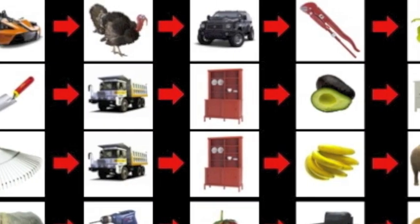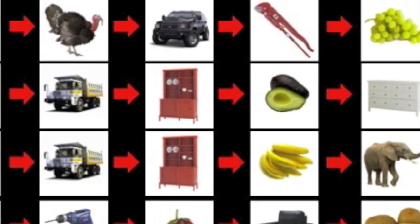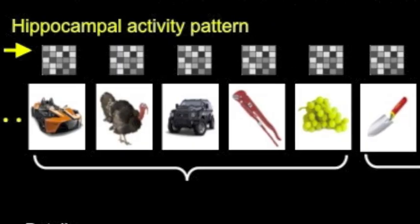Before we put a participant into a scanner, we had the participant learn a bunch of object sequences, and then while they're in the scanner, they perform an independent task that, even though they don't really need to actively retrieve the sequence information, they still incidentally use the sequence information to guide their behaviors. So we can see the activity pattern associated with a specific object.